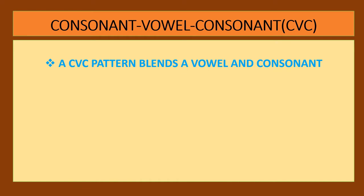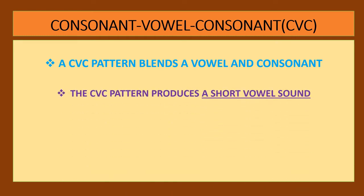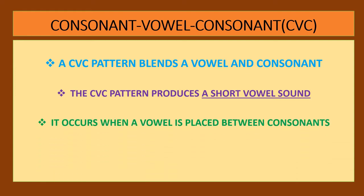A consonant-vowel-consonant, or CVC, is a pattern that blends a vowel and consonant. The CVC pattern produces a short vowel sound. It occurs when a vowel is placed between consonants, and this mostly occurs in three-letter words.